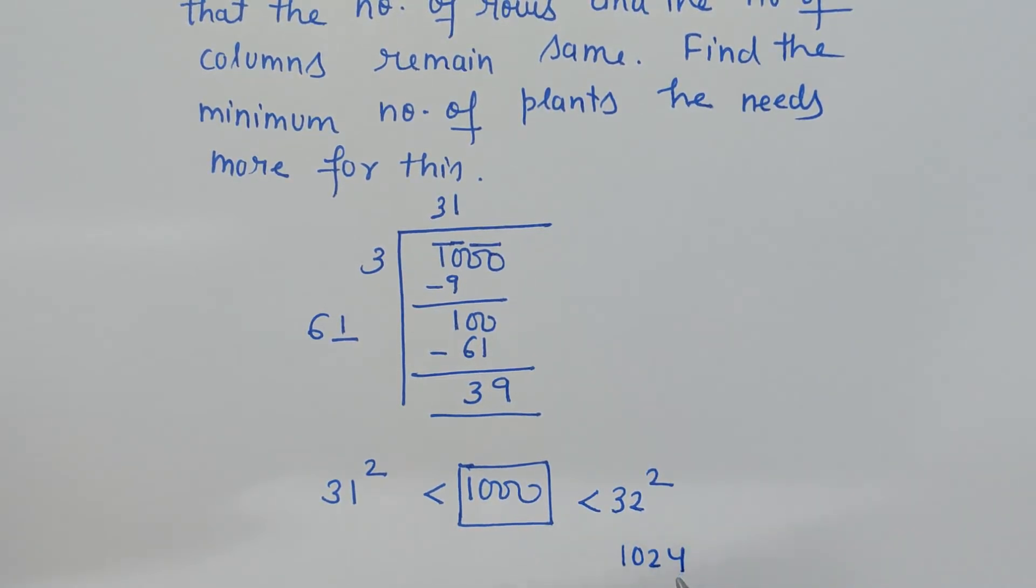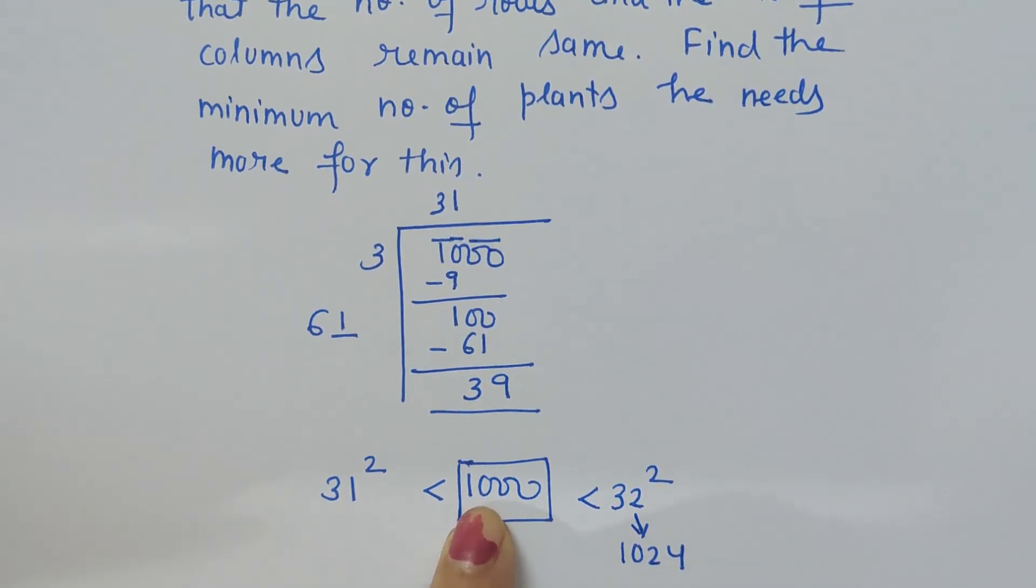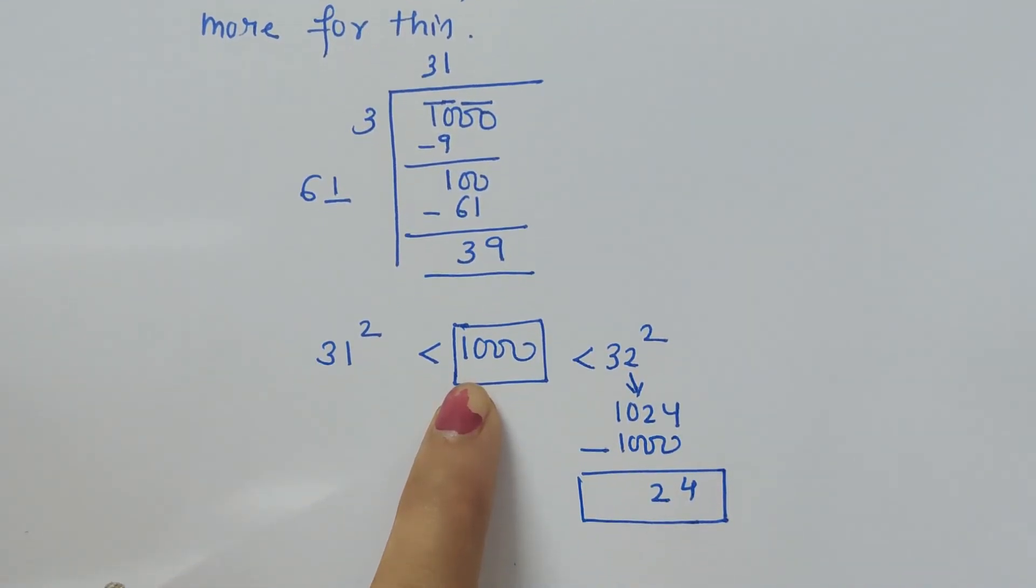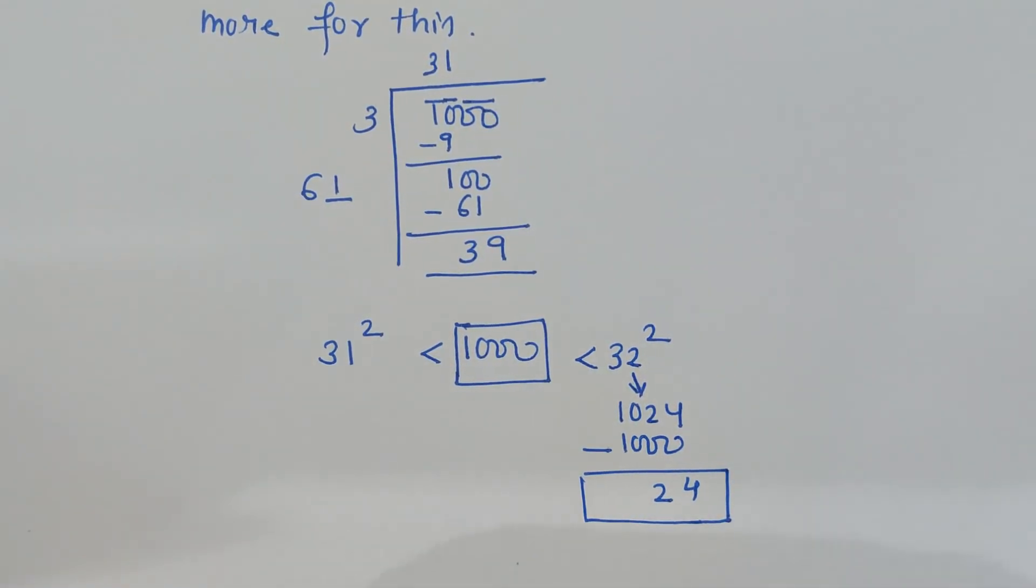For making 1000 a perfect square we just have to check the difference. So it is 24. That means 24 more plants are required, then only a gardener can plant it in such a way that number of rows and number of columns are same.